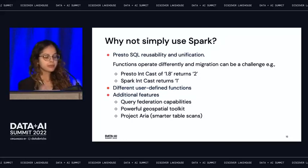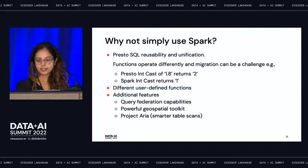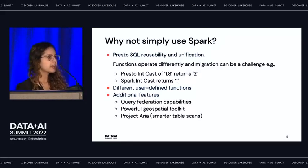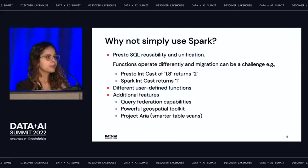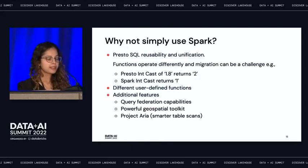There are additional powerful features of Presto you'd want to preserve: federated query capabilities that let you connect to multiple heterogeneous data sources; a powerful geospatial toolkit supporting well-known text and well-known binary formats; Project Aria, which offers smarter table scans with subfield pruning so you only read specified map keys rather than all keys; efficient row skipping; and adaptive filter ordering for immediate performance gains.